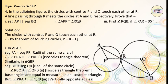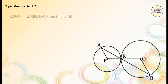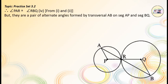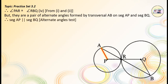Therefore, angle PAR is congruent to angle RBQ — equation No. 4 — from equations 1 and 2. But they are a pair of alternate angles formed by the transversal AB on seg AP and seg BQ. Therefore, seg AP is parallel to seg BQ, by the alternate angle test.